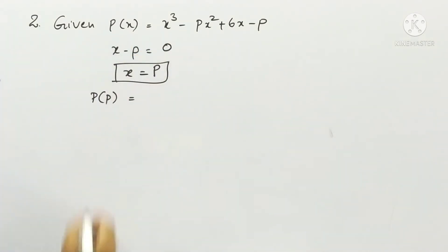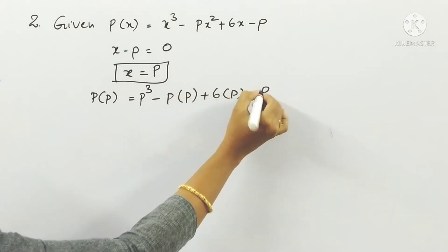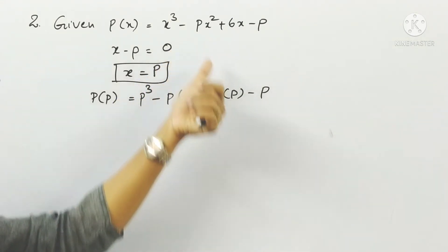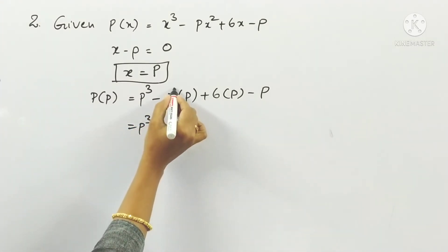P(p) equals p³ - p into p + 6 into p - p. Simply write p in the place of x. So p³, and here p into p: when bases are equal the powers will be added.